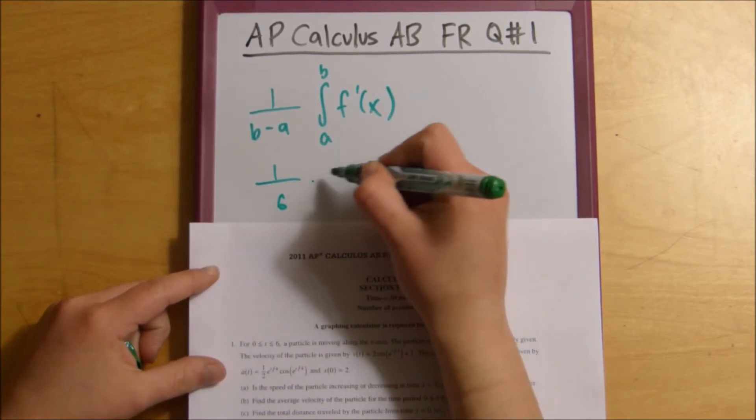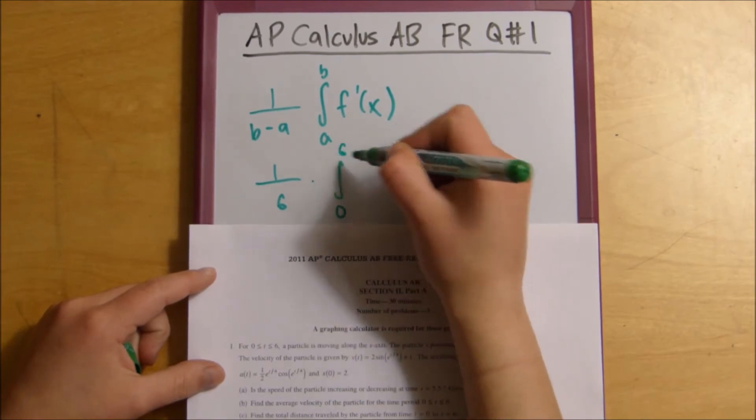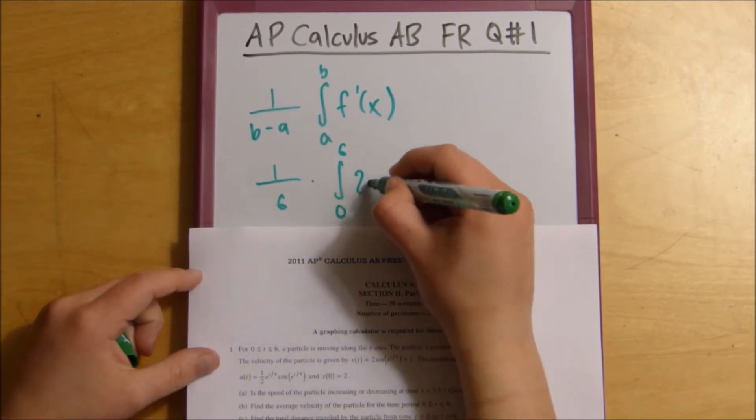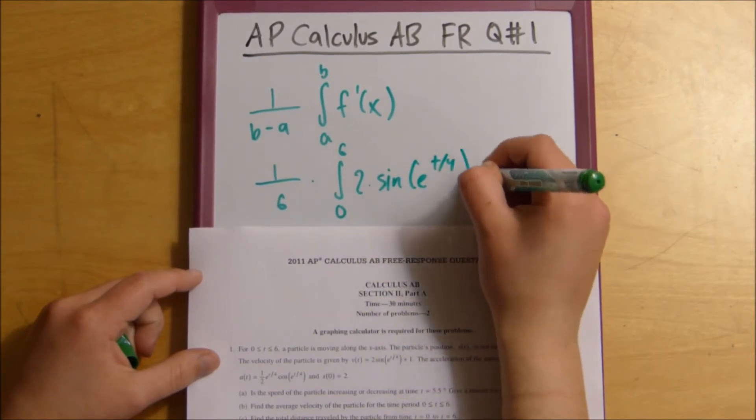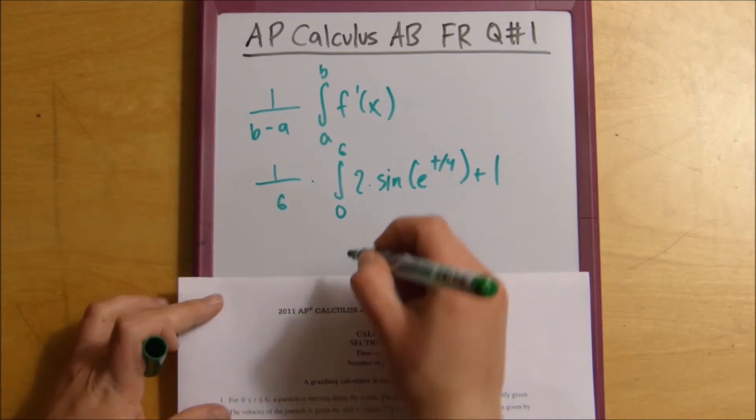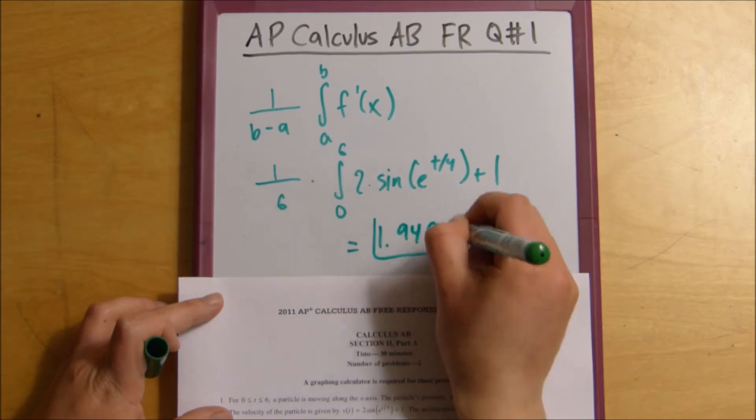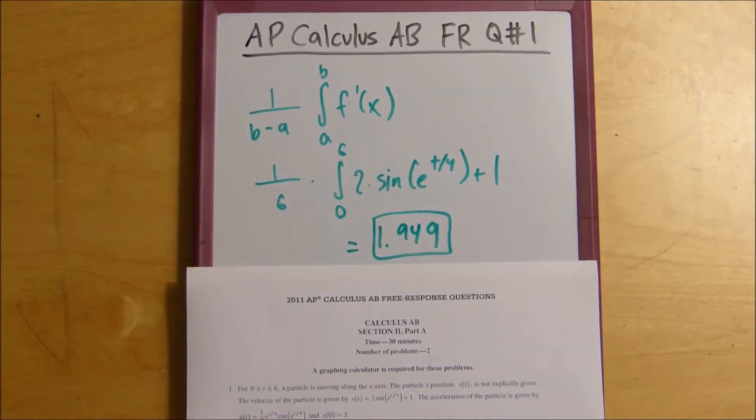Since we're given f prime of x, that's the velocity, we would say that this is from 6 to 0, 1 over 6, times from 0 to 6 of our velocity, 2 times sin et divided by 4 plus 1. And then you just plug that into your calculator and you get that this equals 1.949. That's your average velocity.